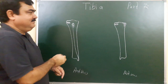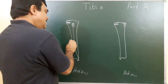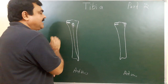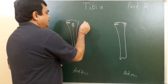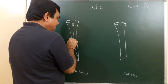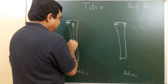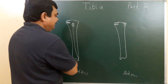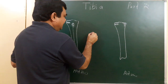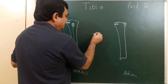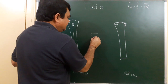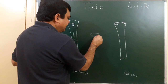Shaft of the tibia. Now let's discuss about the shaft of the tibia. If you cut a transverse section at this level, you will find the tibia is triangular in shape.